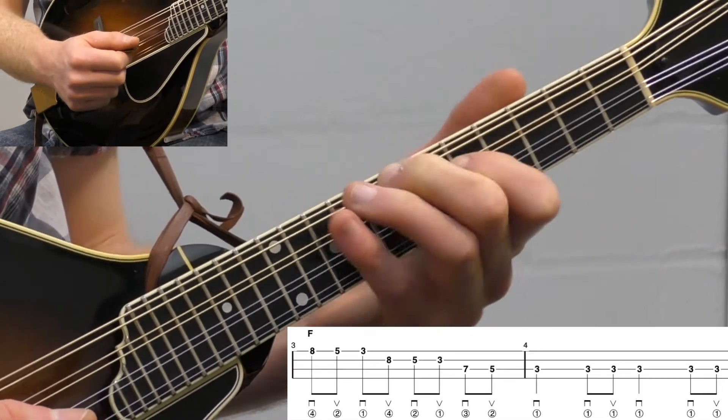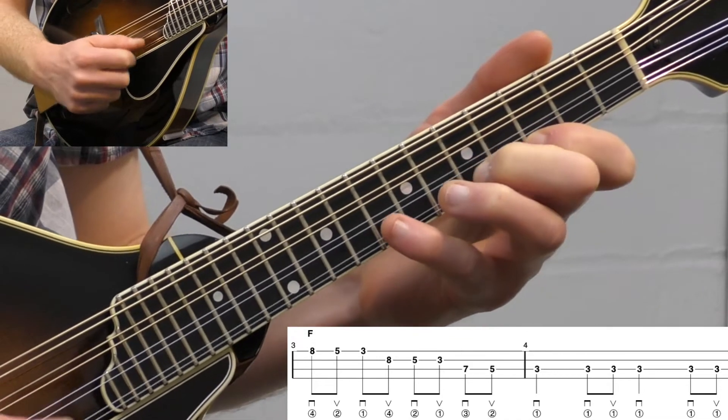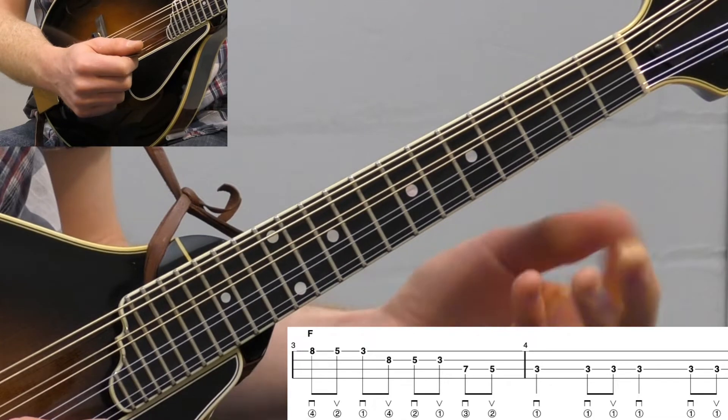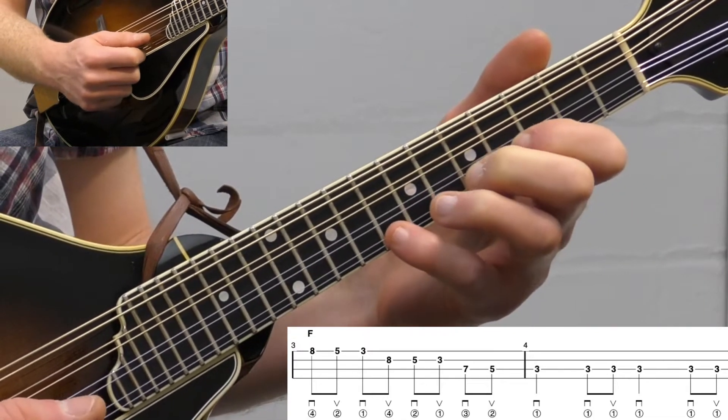Let's do it one more time, and then let's shift down to F. Same lick now starting on the 8th fret. Really important is using all the same fingers so the lick feels the same.